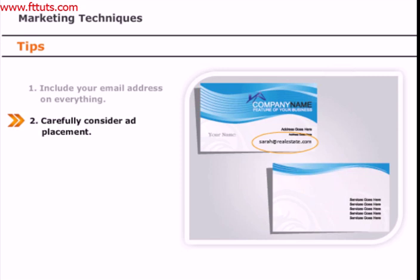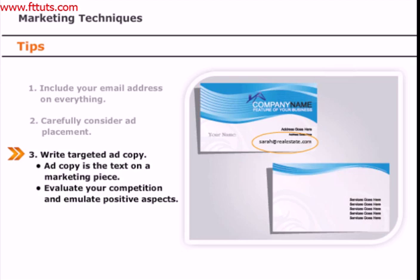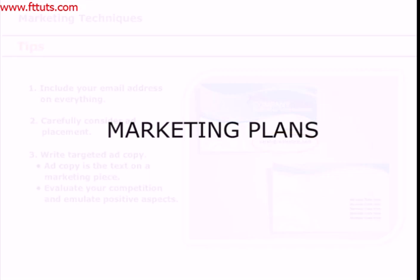Putting rent-to-own signs in upscale neighborhoods might not bring the best results either. Think about where the marketing will be most effective and then try some things out for a month or so to see how they work. Also, provide targeted quality ad copy — the text on a marketing piece. If you are not confident in your writing abilities, look at competitors' marketing pieces, underline parts that grab your attention, and try to emulate that kind of writing. For instance, if targeting young college buyers, say something like: 'We have many great starter homes just blocks from ABC College. Contact us today. Bad credit is okay.'